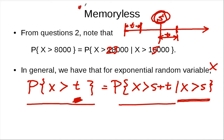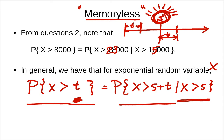People call this the memoryless property of the exponential random variable. It's memoryless because it doesn't remember s. If you know that right now it still works, it still works as if it is new. This is a really nice property of the exponential random variable.